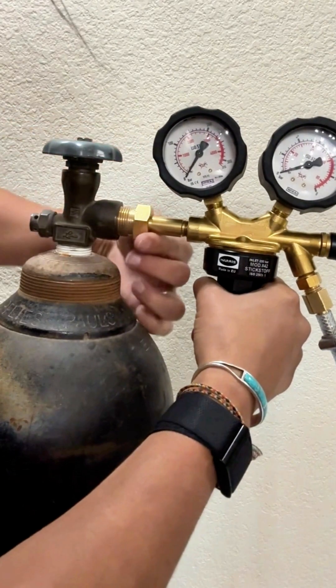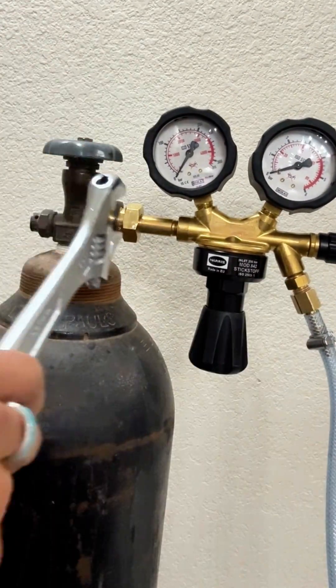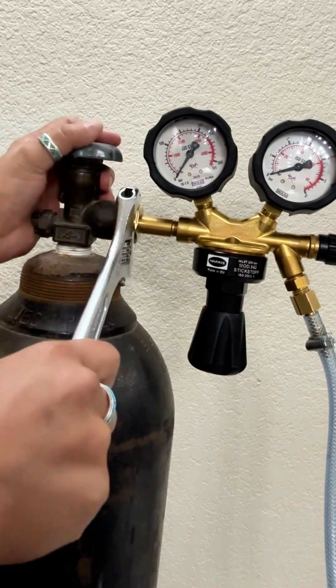The first step is securing the regulator to your nitrogen tank. You'll begin by tightening the fixture by hand, but to completely seal the connection, you need to torque the fixture using a wrench.